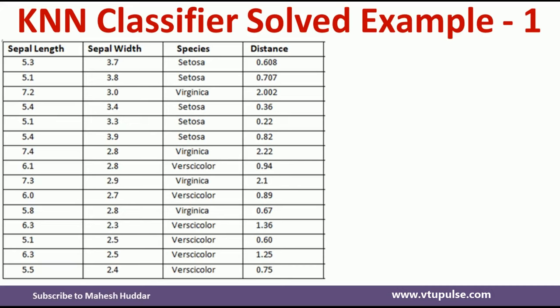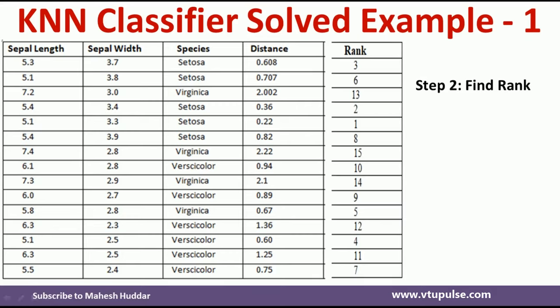Next, we need to calculate the rank of each example with respect to the new example. The example with the minimum distance will have rank 1, the next smallest will have rank 2, and so on. In this case, 0.22 is the smallest, so it gets rank 1. The next is 0.36, which gets rank 2. Then 0.608 gets rank 3, and so on. We sort all distances in ascending order so that the smallest distance has rank 1.